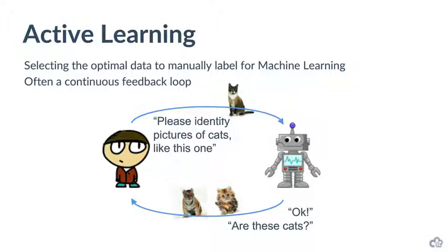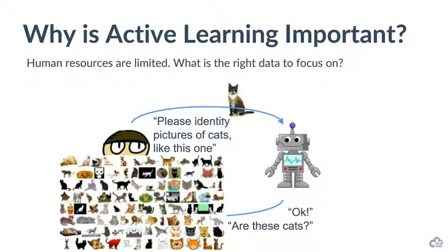Once the humans either confirm or deny that these are cats and provide that information back, the machine learning algorithm is able to get smarter faster. The reason this is important is that human resources are limited, and we need to work out what is the right data to focus on. You could imagine millions of potential cat pictures going through your machine learning algorithm, and you can't put all of those millions in front of a human for review. The task of active learning is to select among all these possible candidates which are the right ones to put in front of a human for review, and what is the right order.